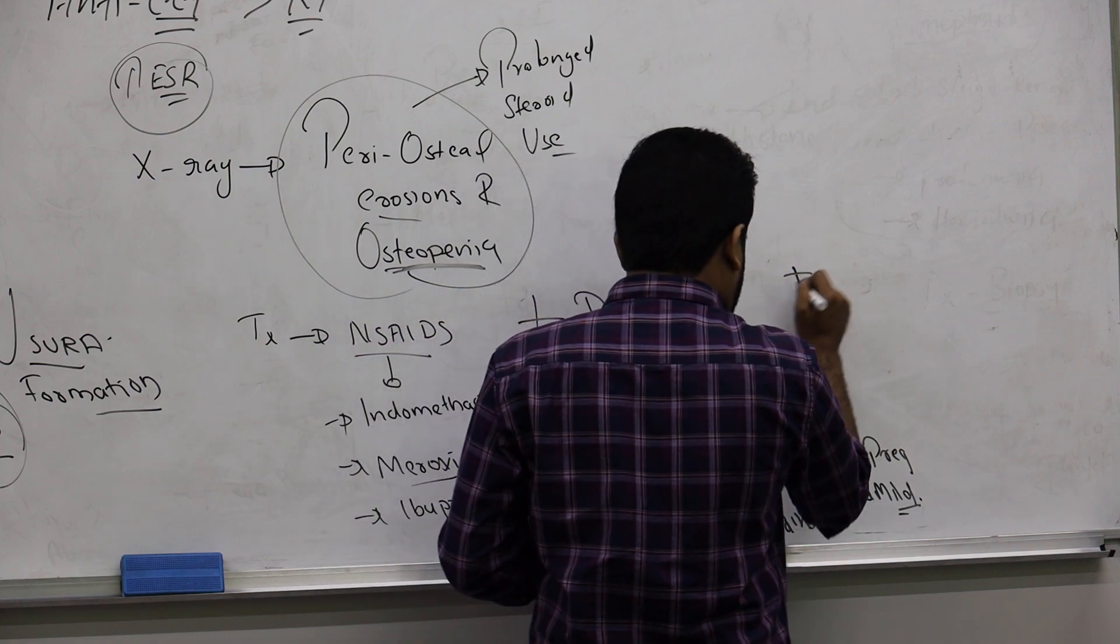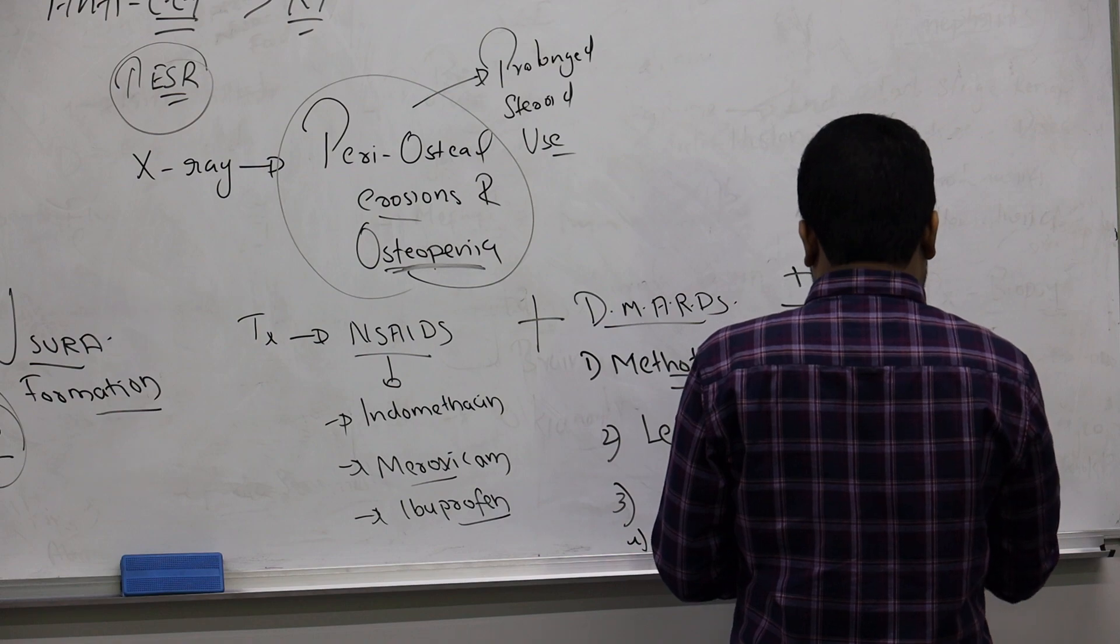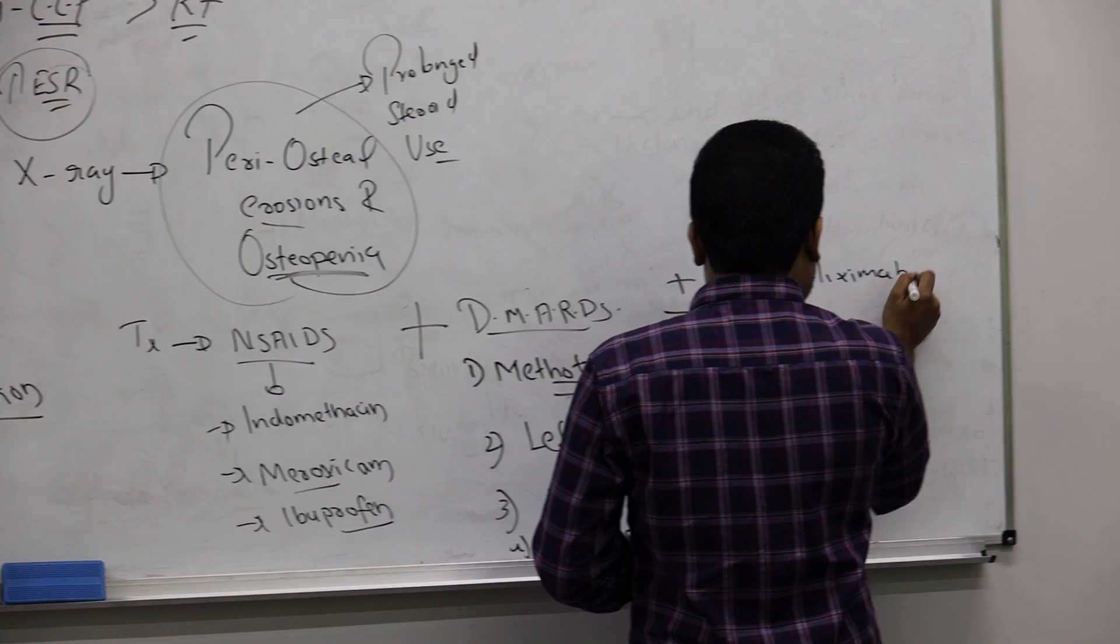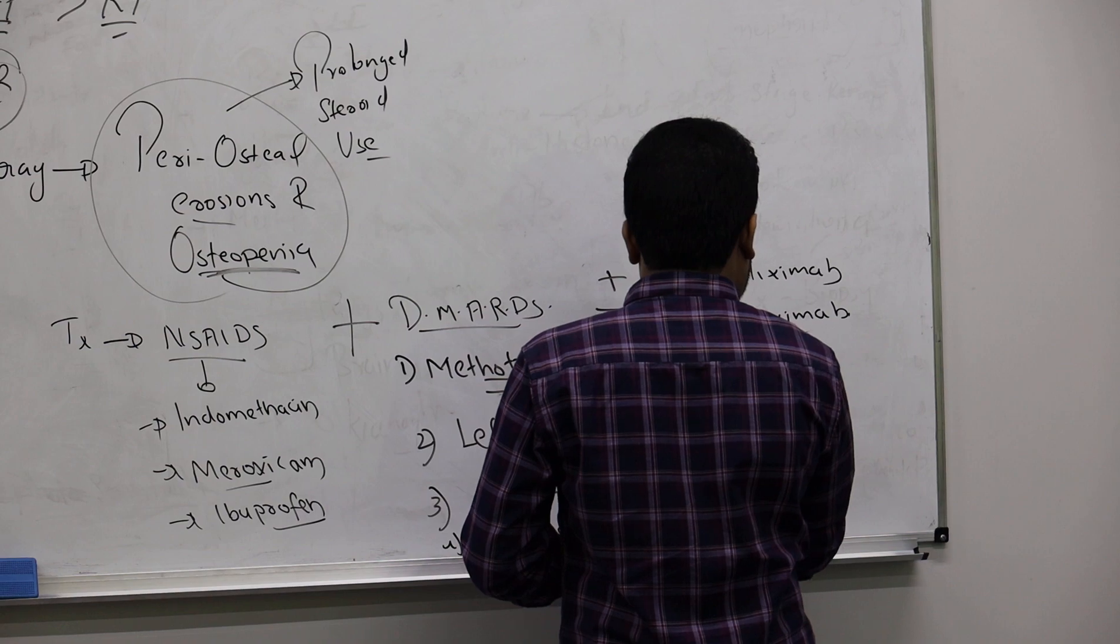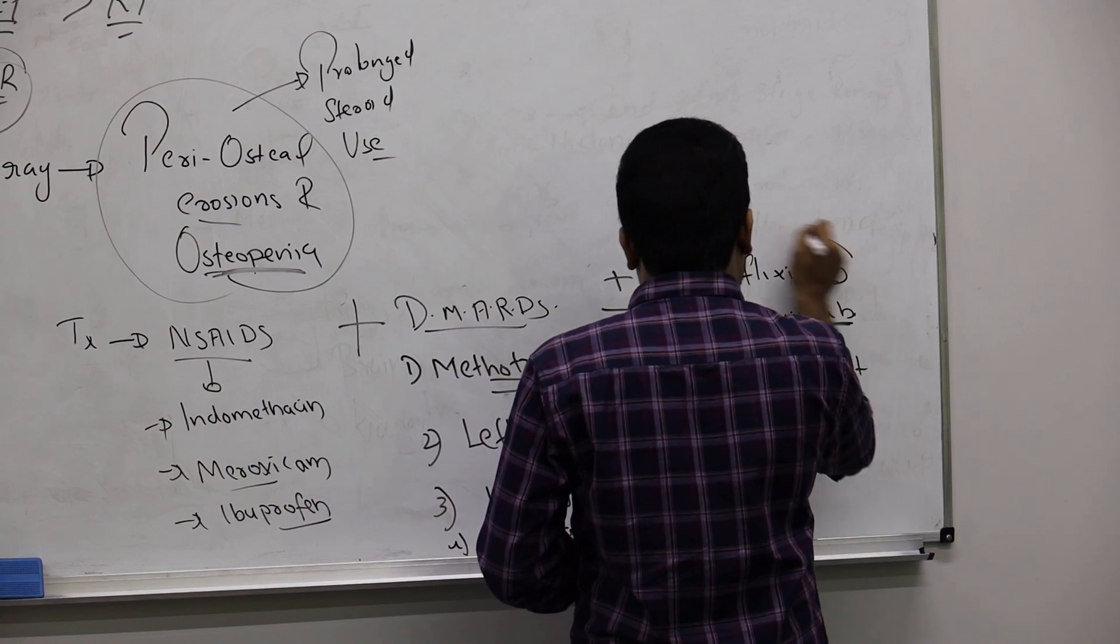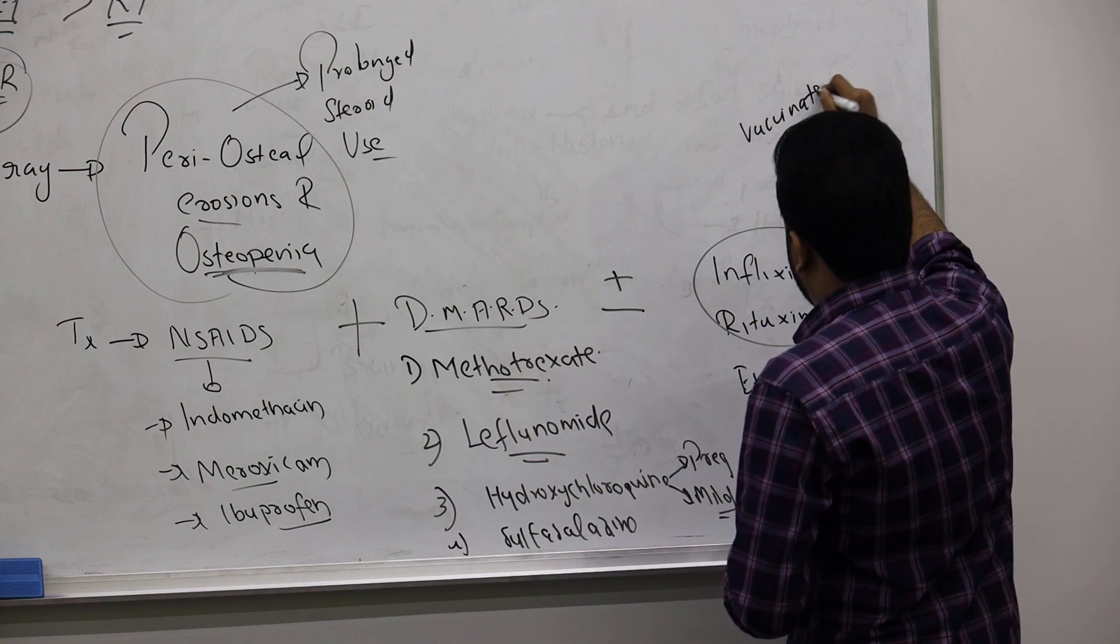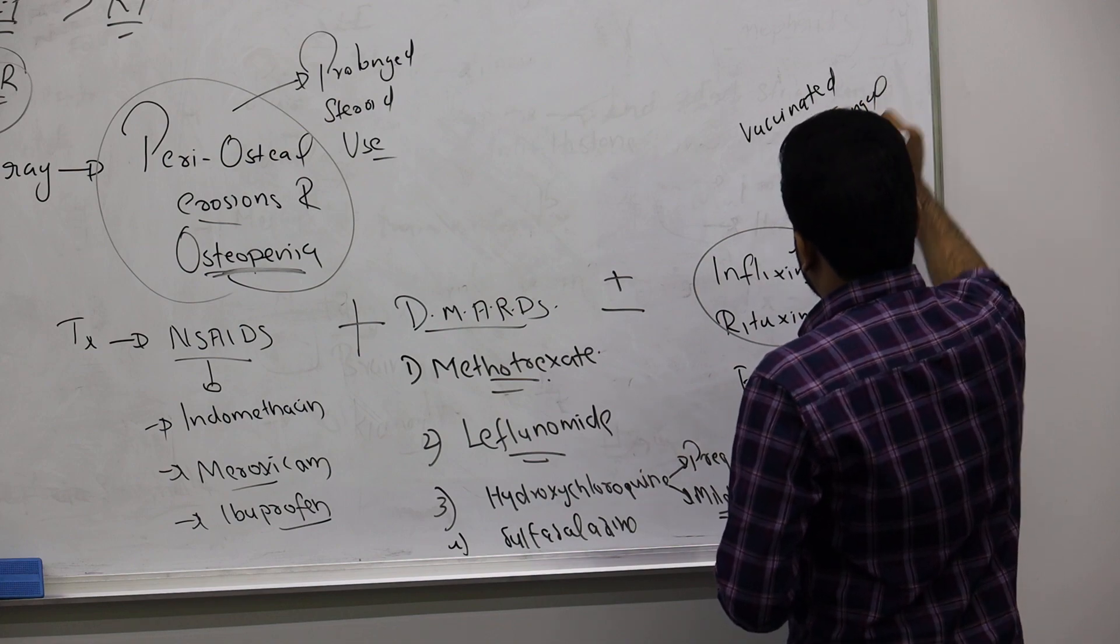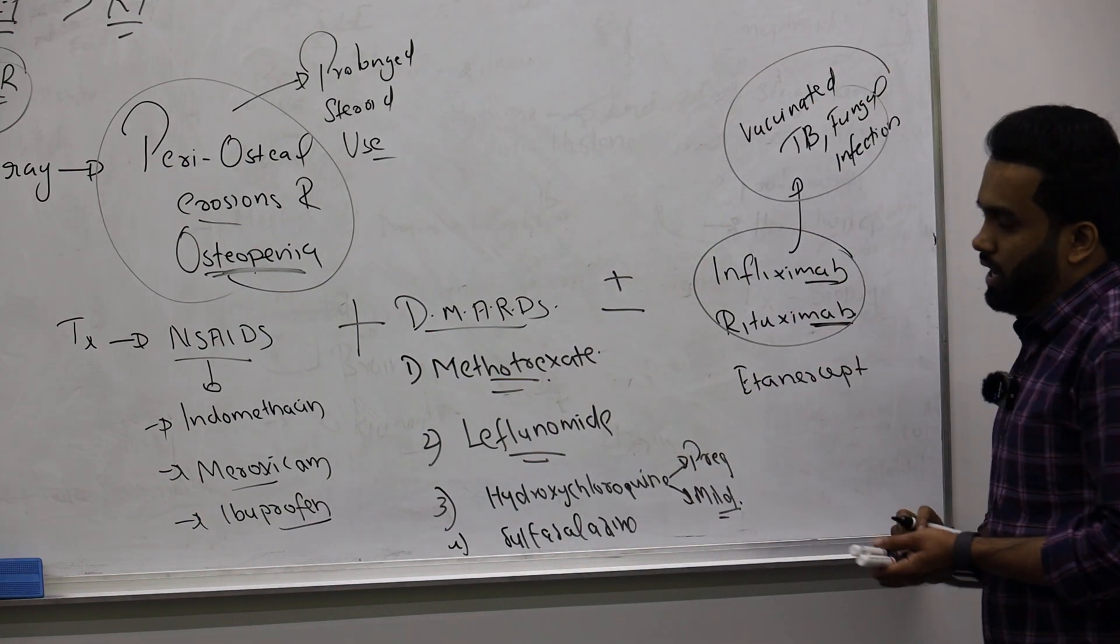Plus or minus you can use immune modulators like infliximab or rituximab, etanercept. Make sure if someone is using immunomodulators, monoclonal antibodies, they got vaccinated because this can induce TB or any other fungal infection. The side effect, they induce this disease, so make sure patient is already vaccinated for these diseases.